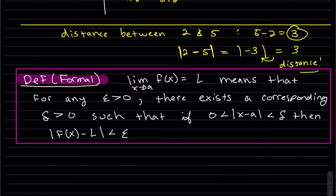Such that if this inequality is true, meaning the distance between x and a is small, it's smaller than delta. If that's true, then the distance between the function and the limit is smaller than epsilon. So that's the formal definition.